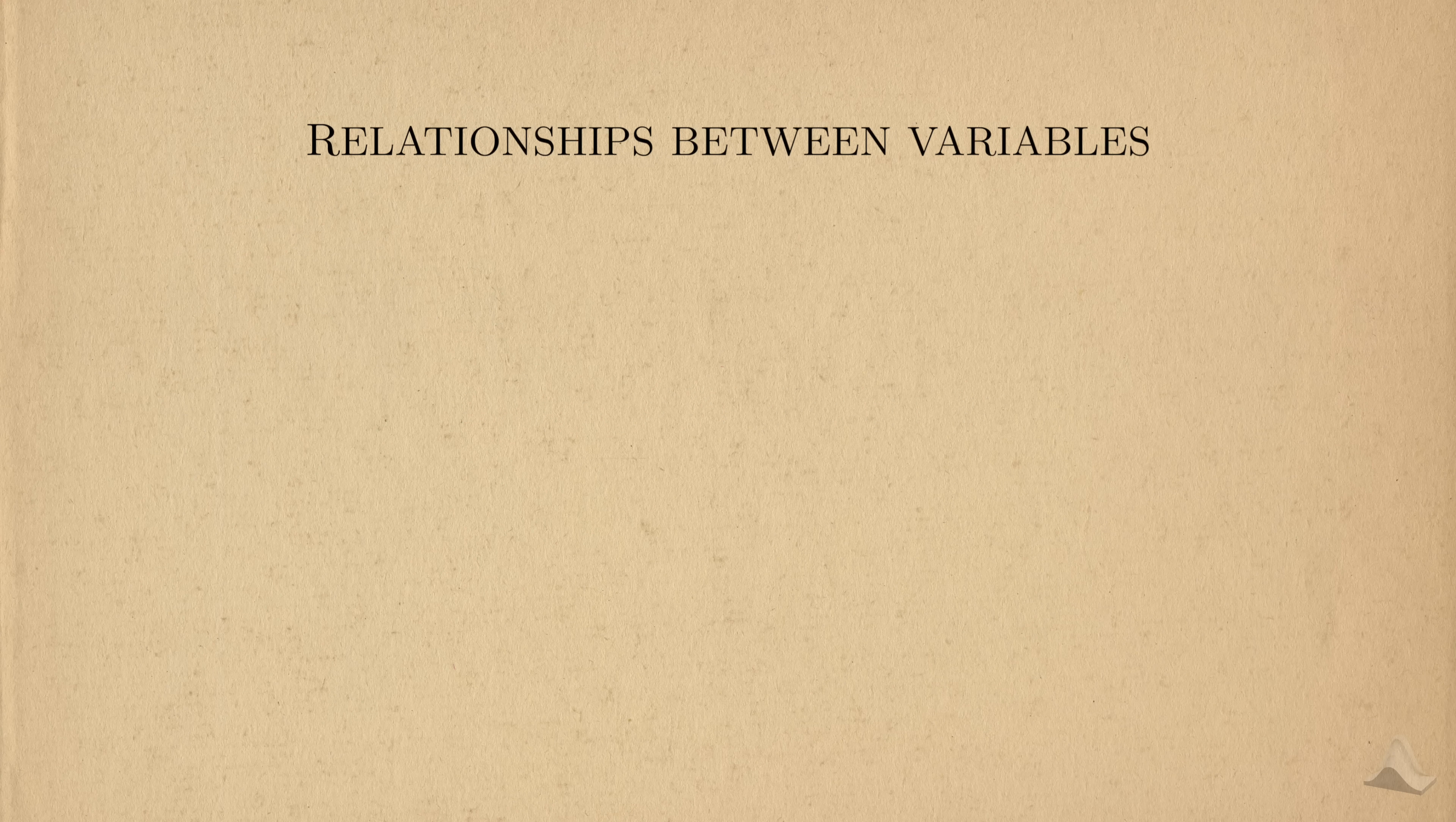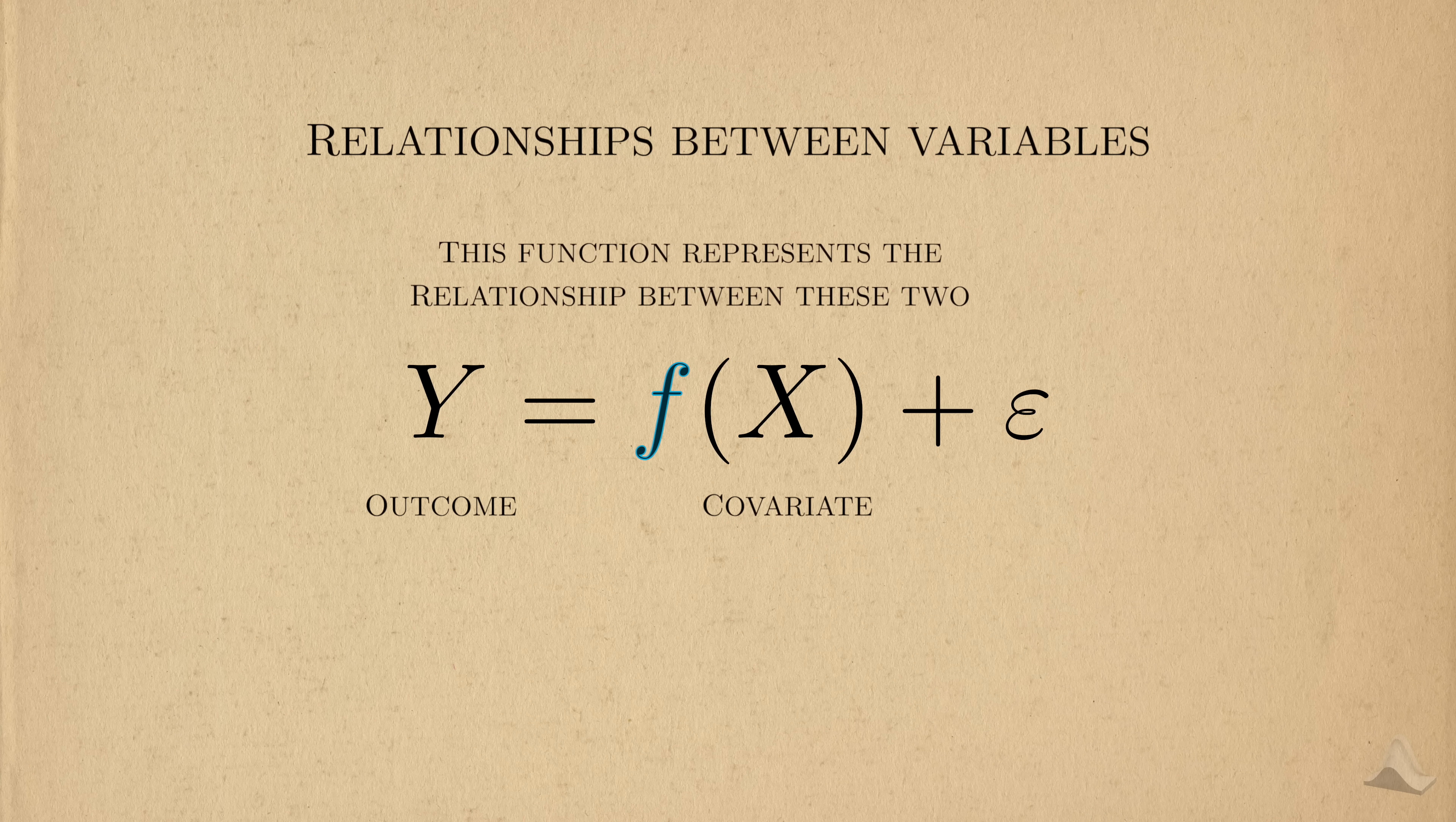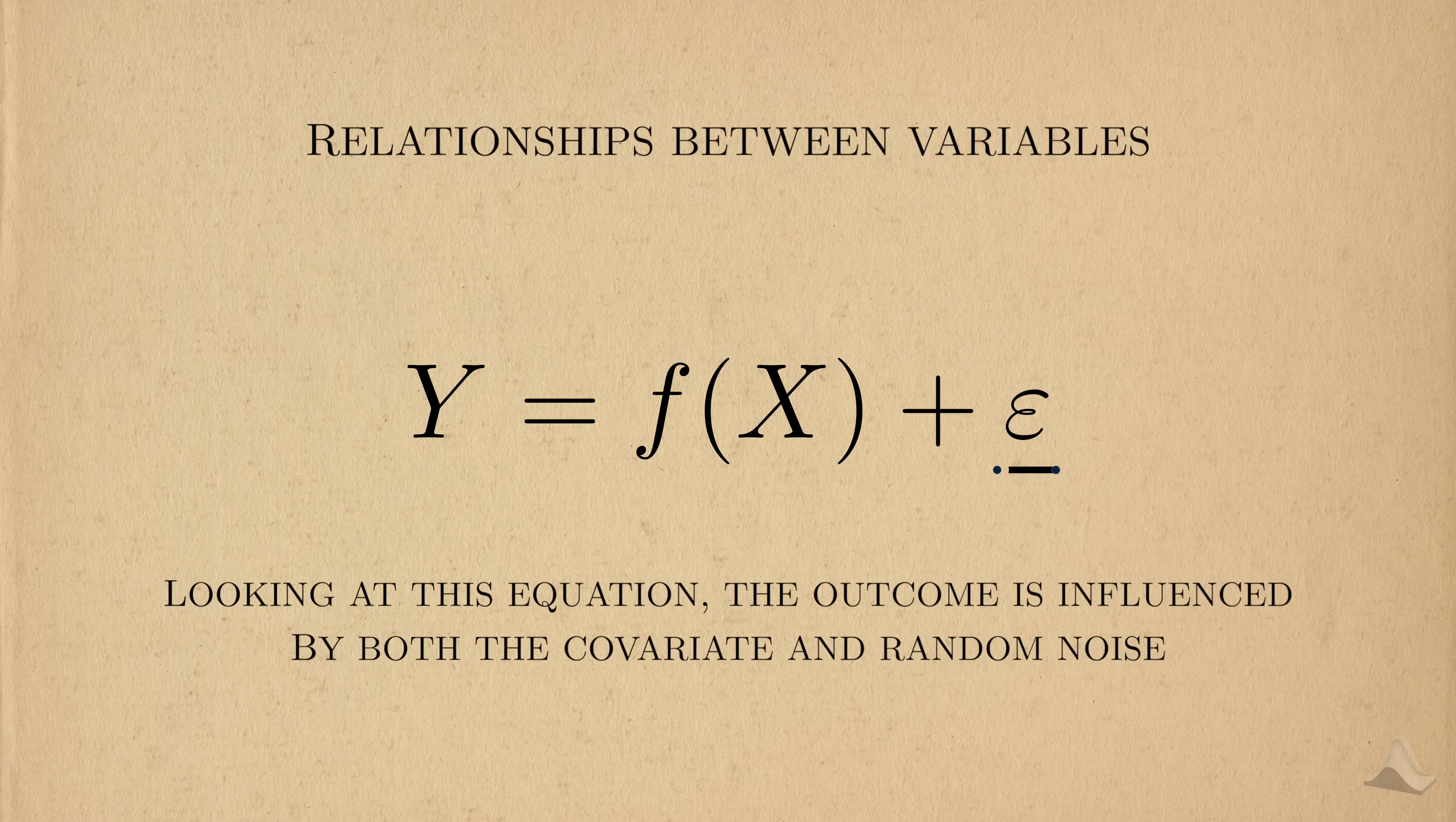In the linear regression video, we started to look at relationships between variables. We were interested in making inferences on the relationship between an outcome Y and another variable X. We'll call X the covariate. The relationship between them can generally be represented by some function f. Figuring out what this relationship is is made harder by the fact that the data is random. What we see in the outcome is not just the effect of the covariate, but the true value is also influenced by random, meaningless noise.